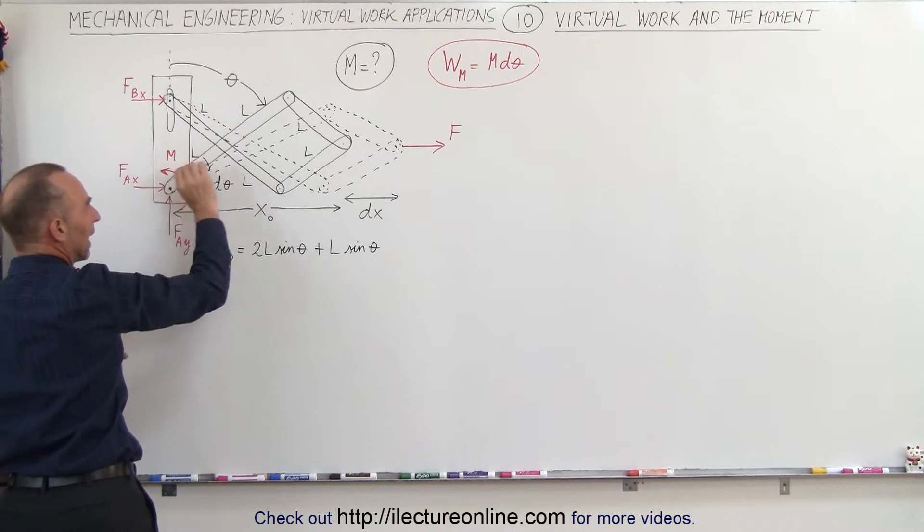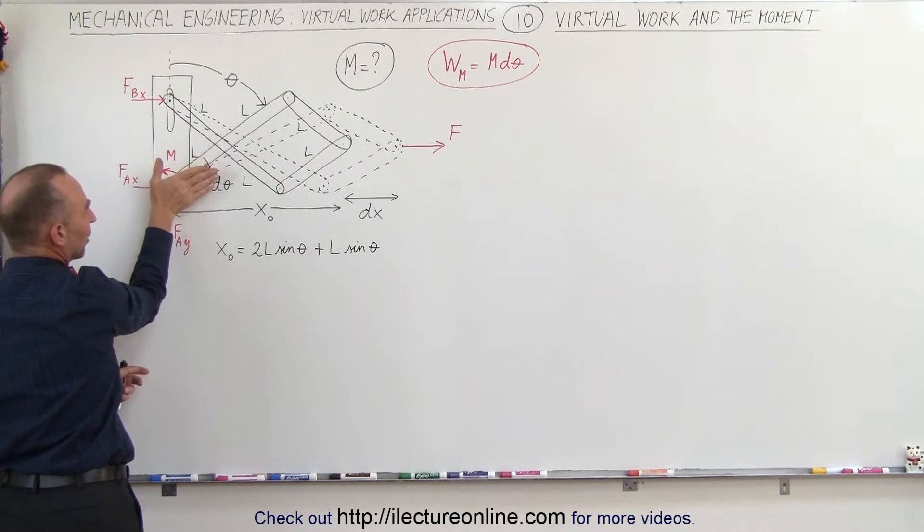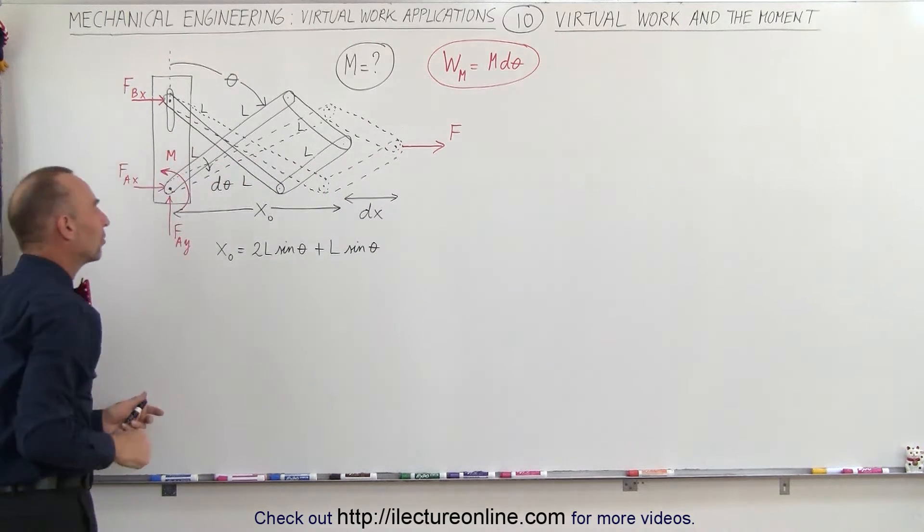There must be some sort of resistance so any pull over here will be counteracted by the moment over here pulling in this direction in a counterclockwise direction.